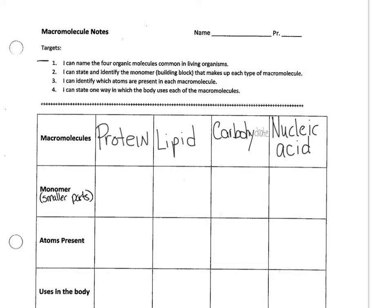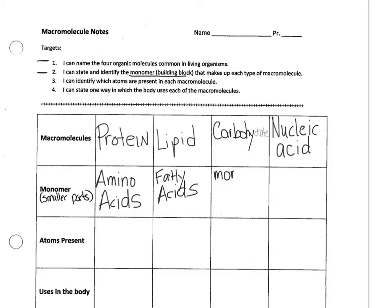The next target is to state and identify the monomer, or building block. The word mono means one, so these are the smaller pieces that make up each type of macromolecule. For a protein, the smaller pieces are called amino acids. For a lipid, they are called fatty acids or glycerol. For carbohydrates, they are mono and disaccharides — mono means one, di means two, and saccharide means sugars. For nucleic acids, the smaller piece is called a nucleotide.